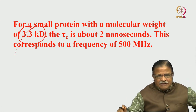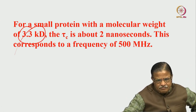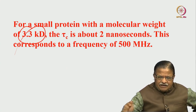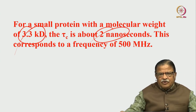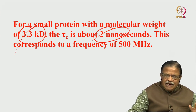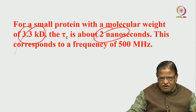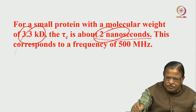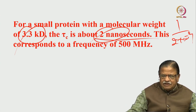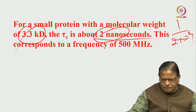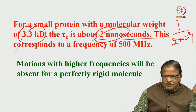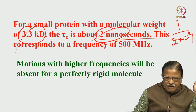For example, if I take a 3.3 kilodalton molecule — a small protein — the correlation time can be calculated as 2 nanoseconds. That means the frequency is the inverse of 2×10⁻⁹, which turns out to be 500 MHz. So that is the frequency corresponding to the correlation time for that particular molecular weight.